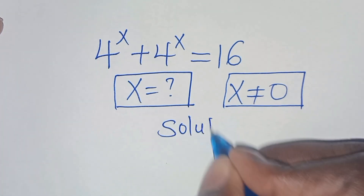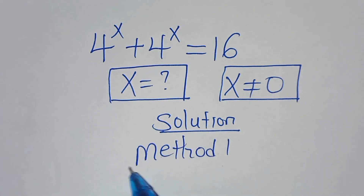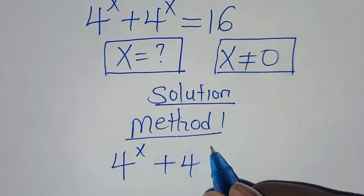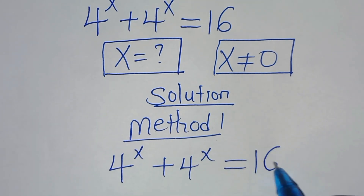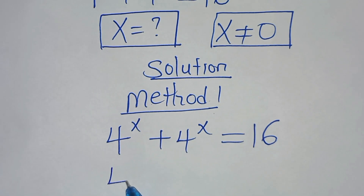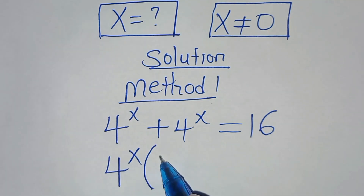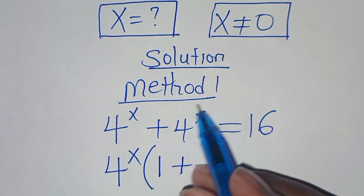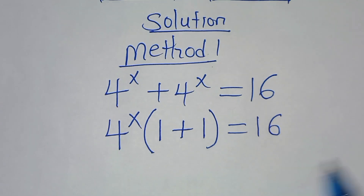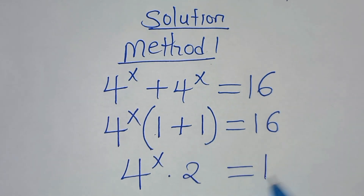Let's start with method 1. We have 4 to the power of x plus 4 to the power of x, this is equal to 16. We have that 4 to the power of x is common, so we can factor it out. Inside the parentheses, 4 to the power of x divided by 4 to the power of x is 1, plus 1, and this is equal to 16. So we have 4 to the power of x multiplied by 2, which equals 16.